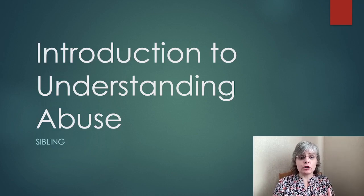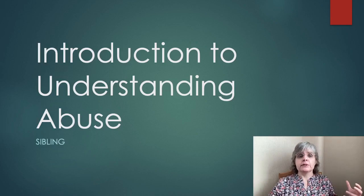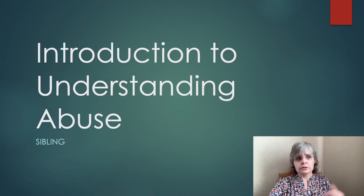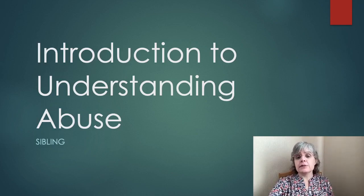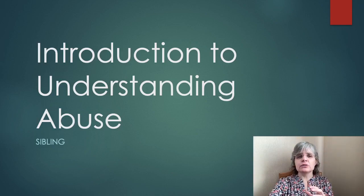Siblings could be biological — two children with the same biological parents — or they could be step-siblings, where one parent has married someone else, so they're half brothers and sisters sharing one biological parent. They could also be through foster care or adoption, where someone is brought into the family and gains siblings. Now, what does sibling abuse involve? Again, it's to do with constancy and intensity.